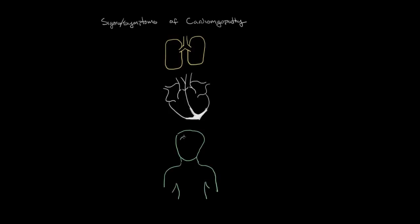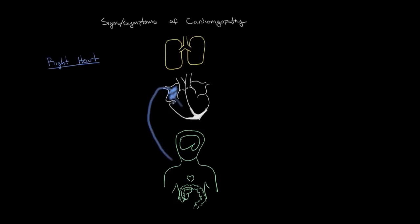Let's give this body a few organs — maybe a brain, a heart, a liver, and some intestines. Imagine this heart is inside someone's body and you're looking at that person, so it's kind of a mirror image. Over here on the left of the diagram, we're going to call this the right heart, and the right heart takes in blood from the body and pumps it to the lungs.